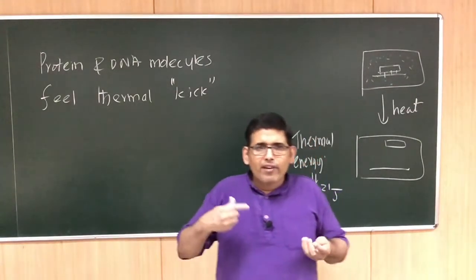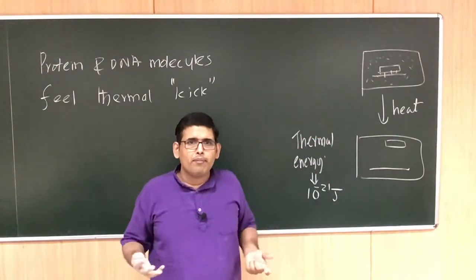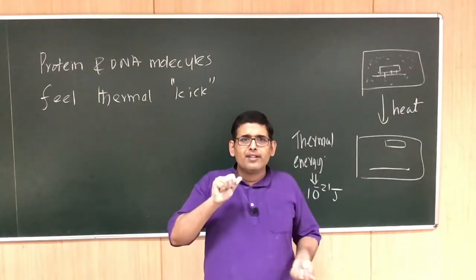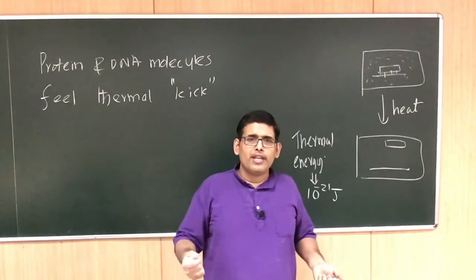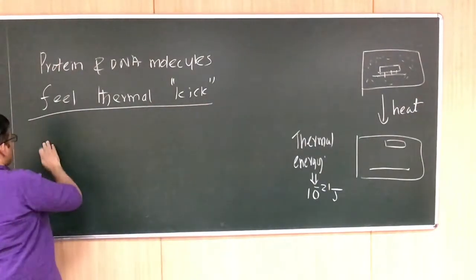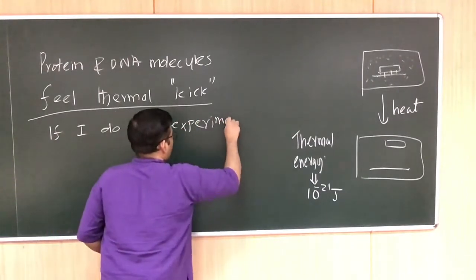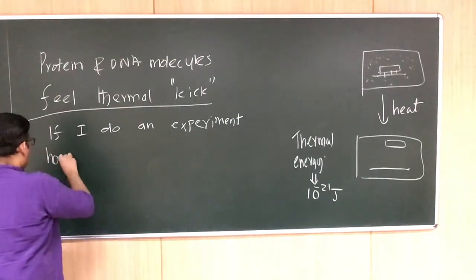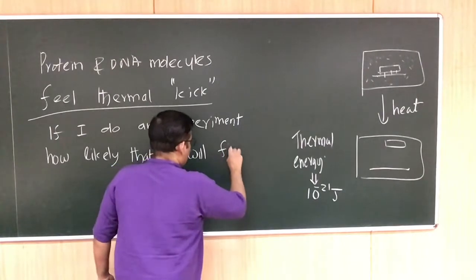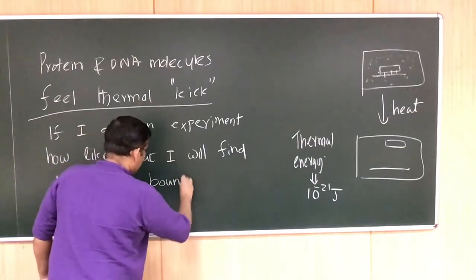Now we have to see how we can use this idea and predict something about the system. We want to predict that if we do an experiment and look at protein and DNA — using some microscope or experimental technique — what will we find? Will I find the protein bound to the DNA or not bound? The question I want to answer is: if I do an experiment, how likely is it that I will find the protein bound on to the DNA?